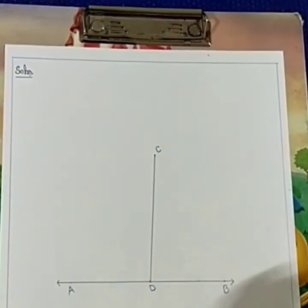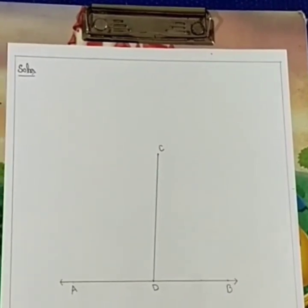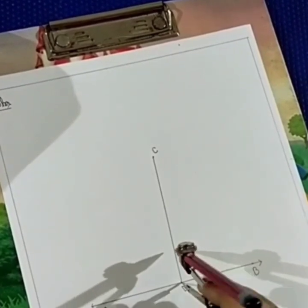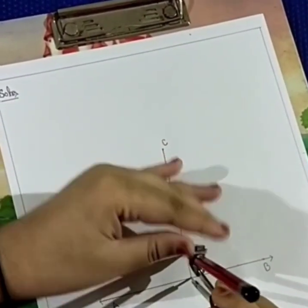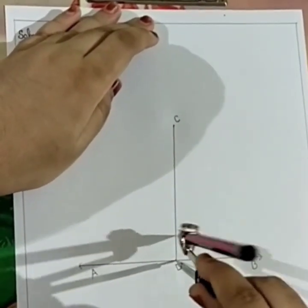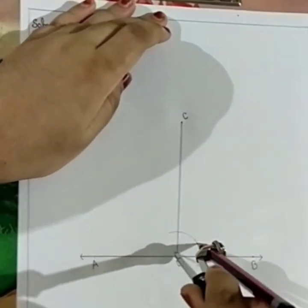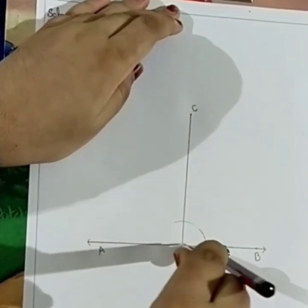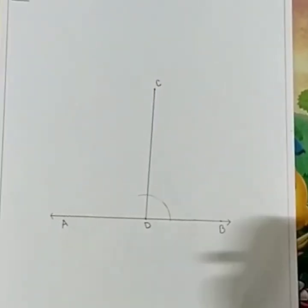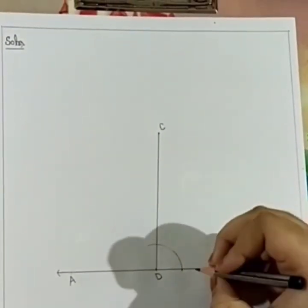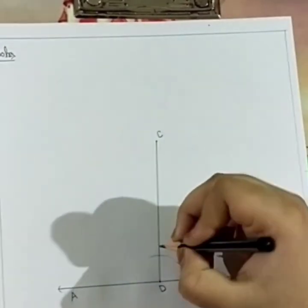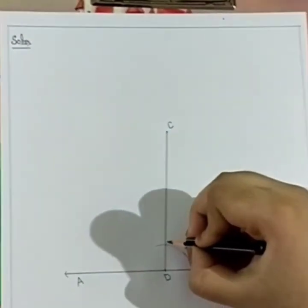Now, we have to draw an arc which intersects AB and CD. Then, here we will name it as E and here we will name it as F.